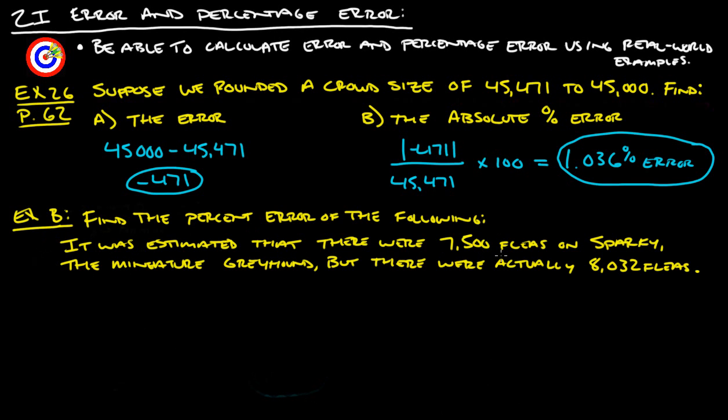It was estimated that there were 7,500 fleas on Sparky, the miniature greyhound, but there were actually 8,032 fleas. Again, we're going to find the percent error of the following.